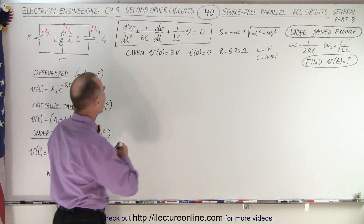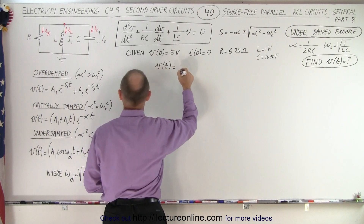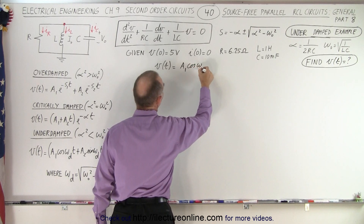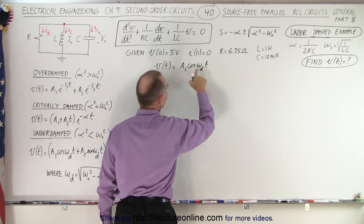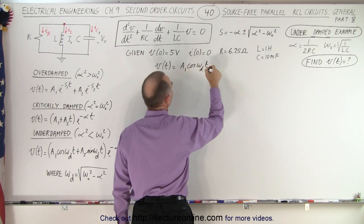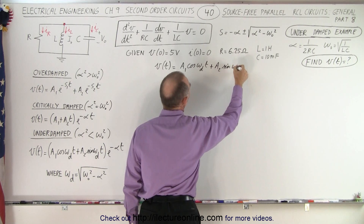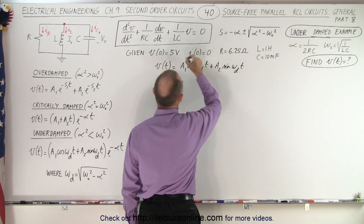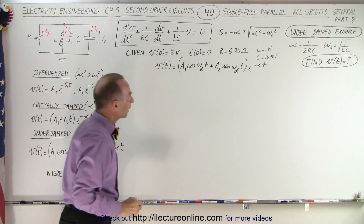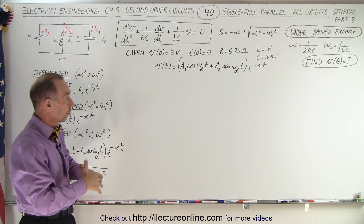The equation we're going to use for the underdamped case is: the voltage as a function of time is equal to A1 times the cosine of omega_d times t, where omega_d is the frequency of oscillation for the damped case, plus A2 times the sine of omega_d times t, all multiplied by e to the minus alpha t.